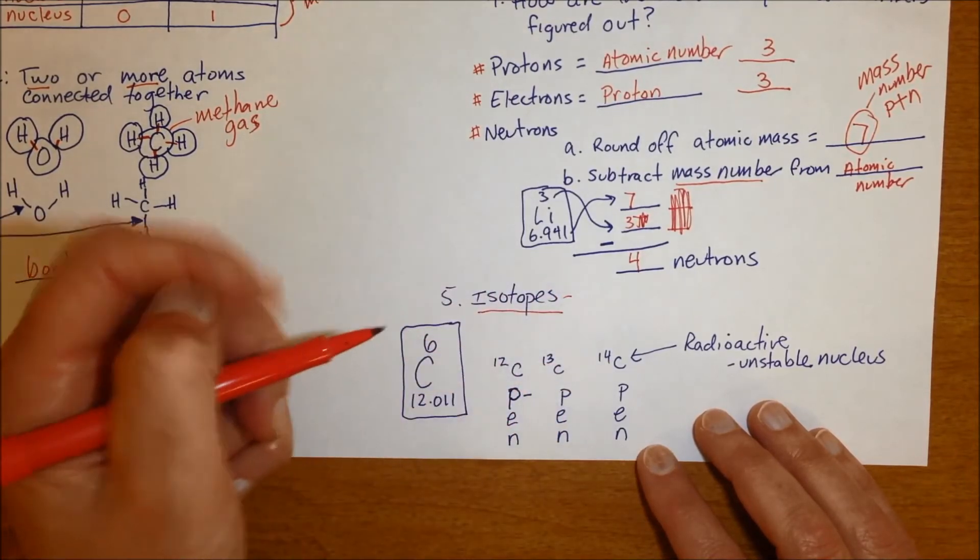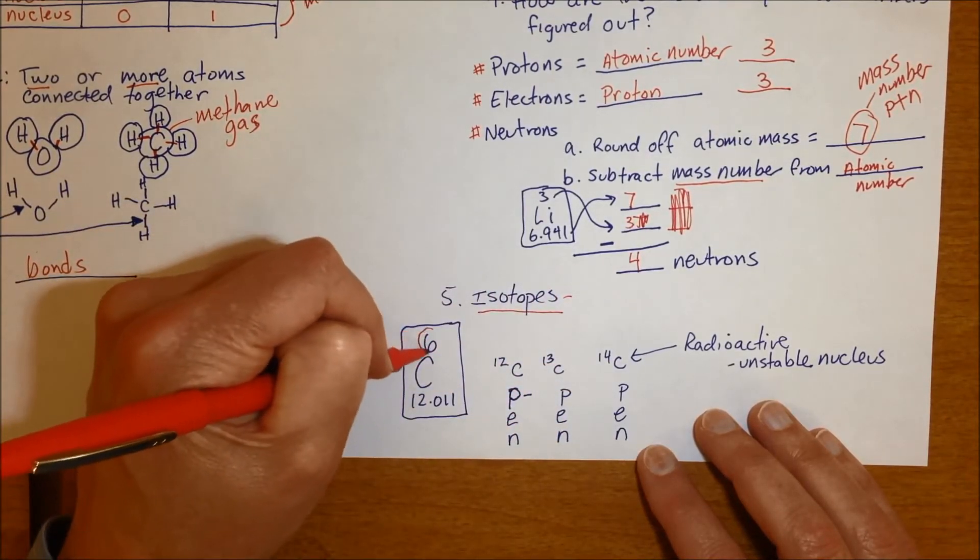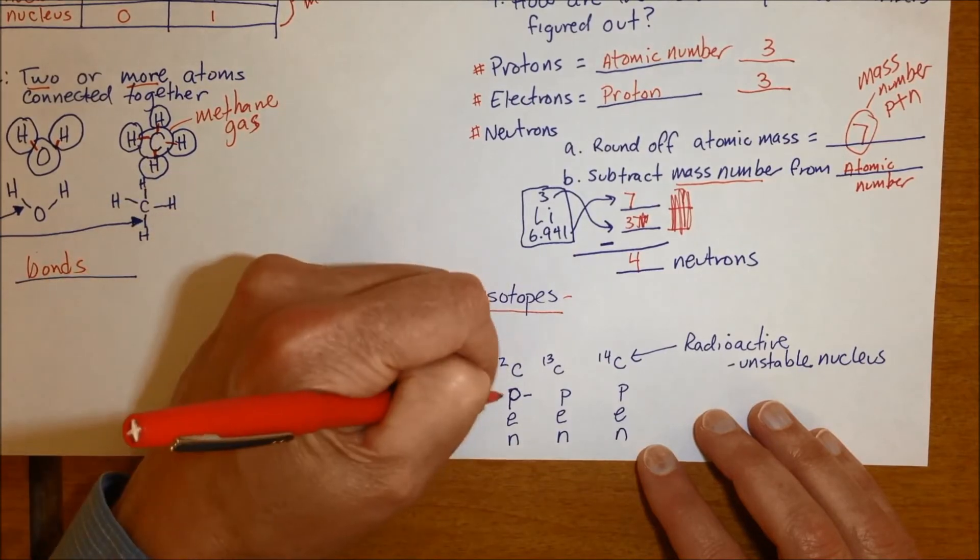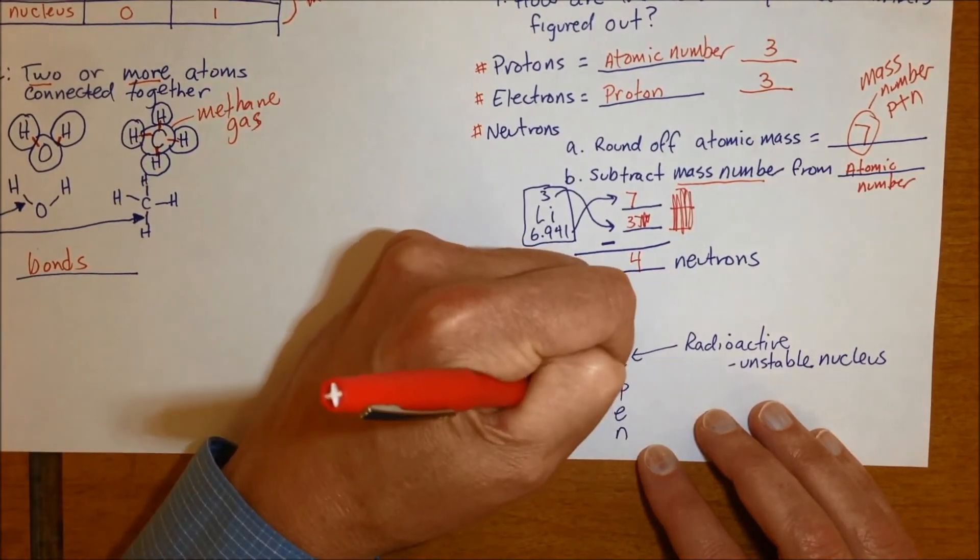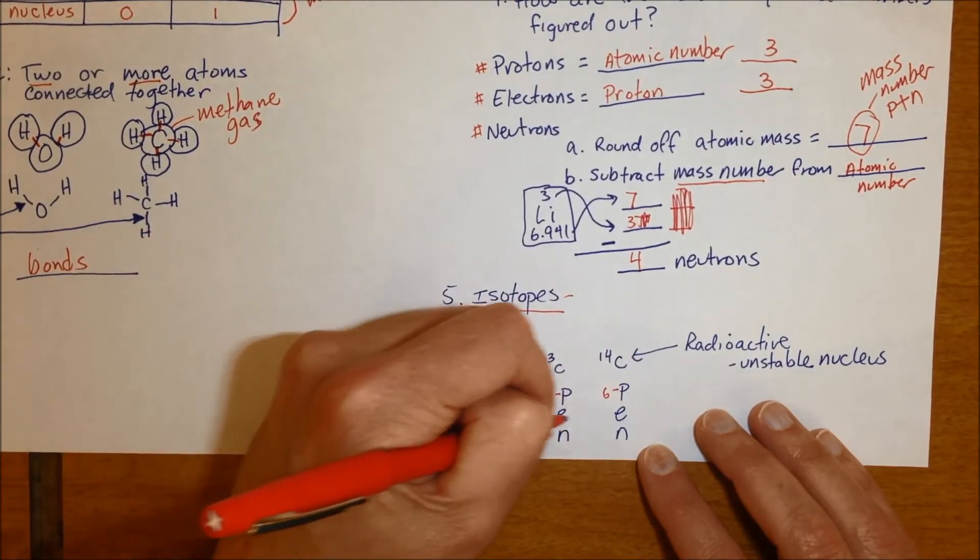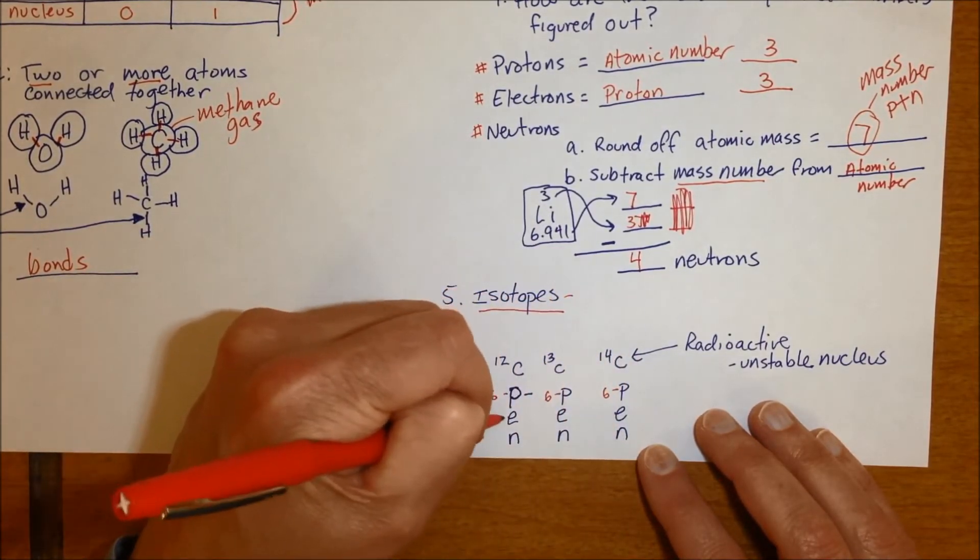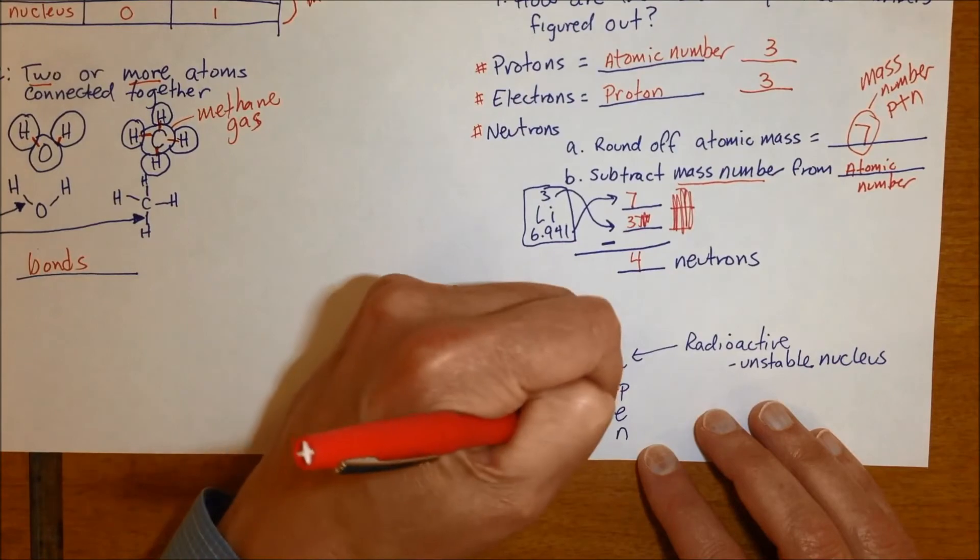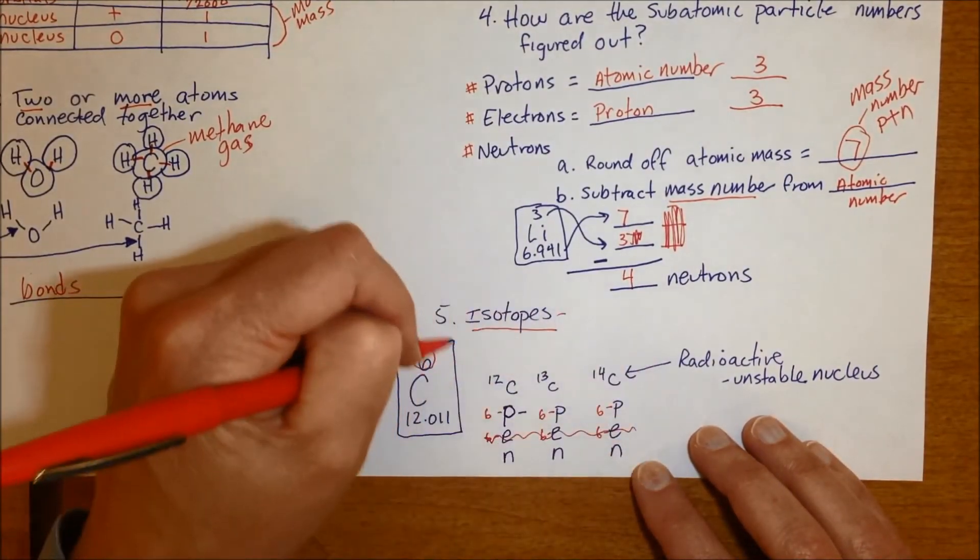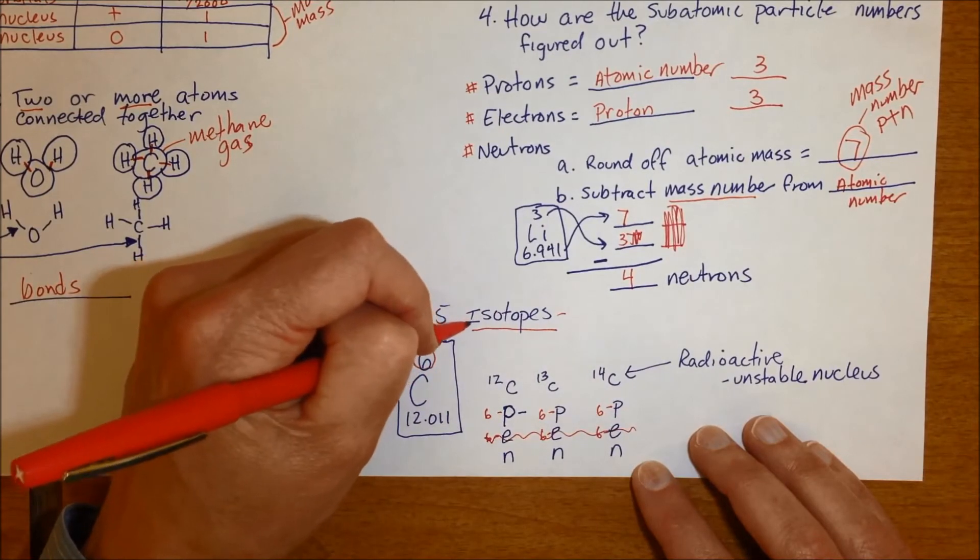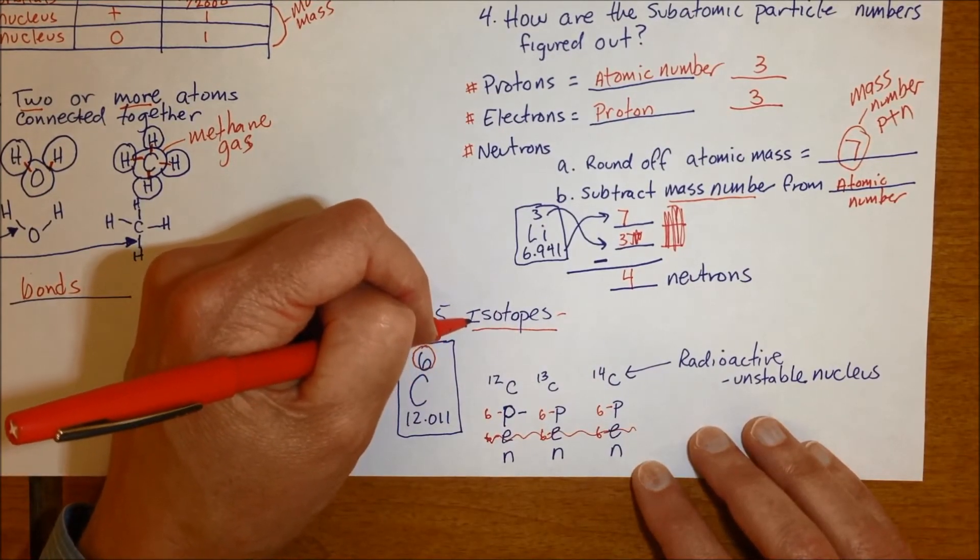We call them carbon-12, carbon-13, and carbon-14. And if you look at them, well, how are they different? Well, since they're carbon, defined by the number of protons, if I looked at how many protons they have, every carbon has six. Carbon has to have six, which also means these all have six electrons following the rule that we just went over. Electrons equals protons.